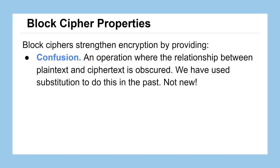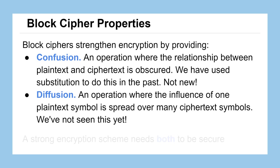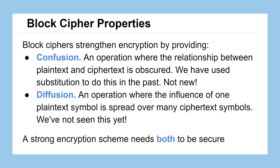The real new piece of encryption we see with block ciphers is called diffusion. This is when an operation is applied where the influence of just one plaintext symbol is spread out over many ciphertext symbols. We have not seen this yet, but we're going to see this adds a big layer of complexity that strengthens encryption quite a bit. We need both of these characteristics for an encryption method in modern times to be considered strong and secure — we can't just have one or the other.